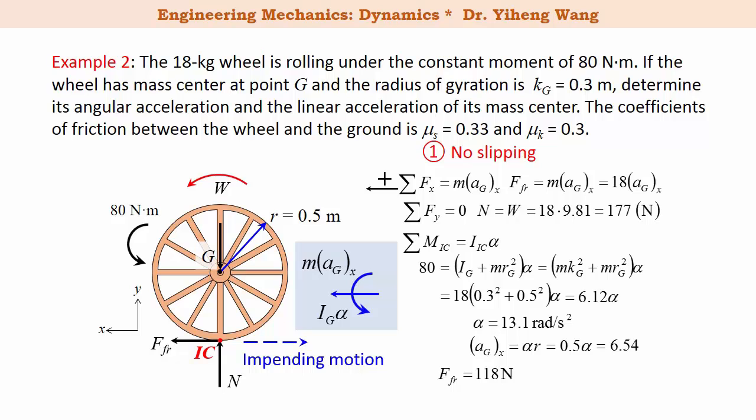However, how do we determine if slipping occurs or not? If this frictional force exceeds the maximum static friction, which is calculated by mu_s times normal force, then it means that slipping does occur. In this case, the frictional force calculated is 118 newton, but mu_s times N is only 58.4 newton. Therefore, we can draw the conclusion that slipping does occur, and the frictional force between the wheel and the ground is actually kinetic friction.